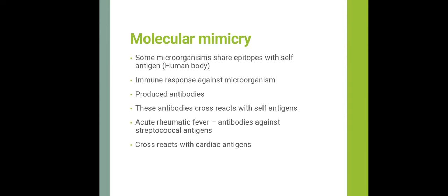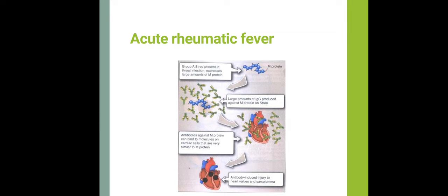Molecular mimicry: some microorganisms share antigenic determinants (epitopes) with self-antigens, so an immune response against such microbes produces antibodies that cross-react with self-antigens. For example, acute rheumatic fever results from antibodies formed against streptococcal M protein that cross-react with cardiac antigens. Group A streptococcus in throat infection expresses large amounts of M protein; IgG produced against M protein also cross-reacts with heart valves, causing antibody-induced injury to heart valves and sarcolemma.